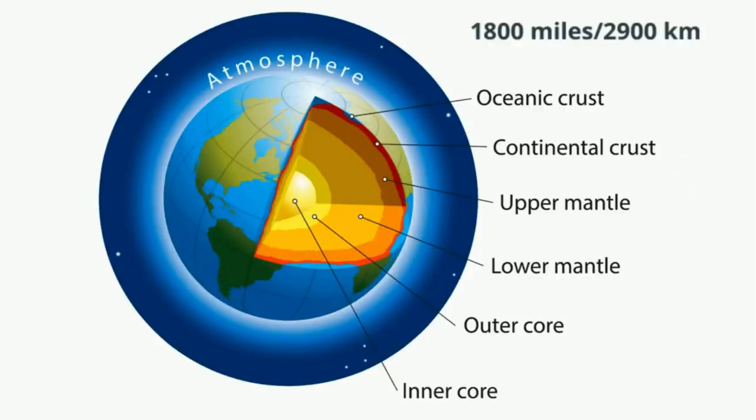The core extends from below the mantle to the center of the earth. Scientists believe the core is made mostly of iron and nickel. The core is the densest layer and makes up about one-third of the earth's mass.